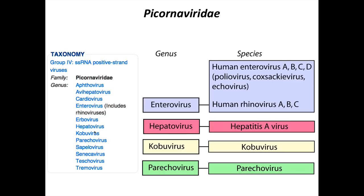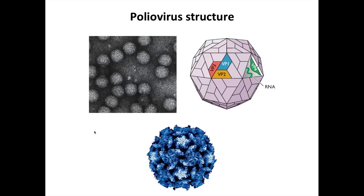Picornaviruses are all positive-strand RNA viruses. Starting with the structure of these viruses, they are all icosahedral virions without an envelope. Here's an electron micrograph of poliovirus - it's about 30 nanometers in diameter. The structure of the virus was solved at atomic resolution in the 1980s. These virions are built with icosahedral symmetry. The capsid is made up of four different polypeptides - VP1, 2, 3, and 4 - which are each repeated 60 times to build the icosahedral shell. VP4 is largely on the interior of the virion.